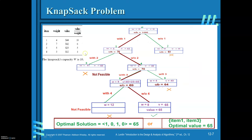Now we decide whether to include item 4 in the sack. If we include item 4, the total weight becomes 9 + 3 = 12, which exceeds the capacity of 10. So this is not feasible. Without item 4, the weight is 9 and the value is 65. Since there are no more items to consider, this is the optimal value. We stop constructing the state space tree.